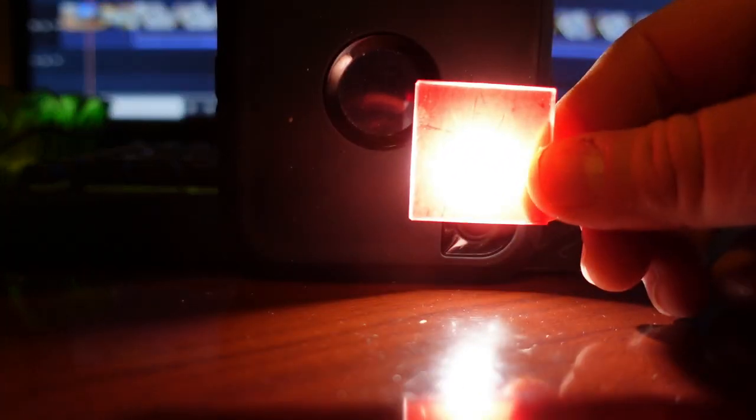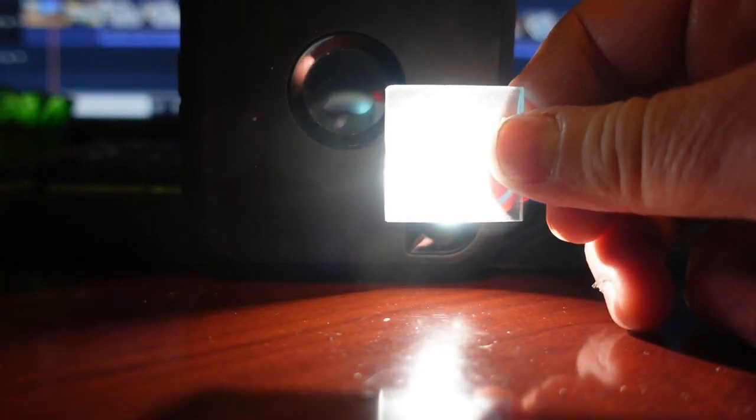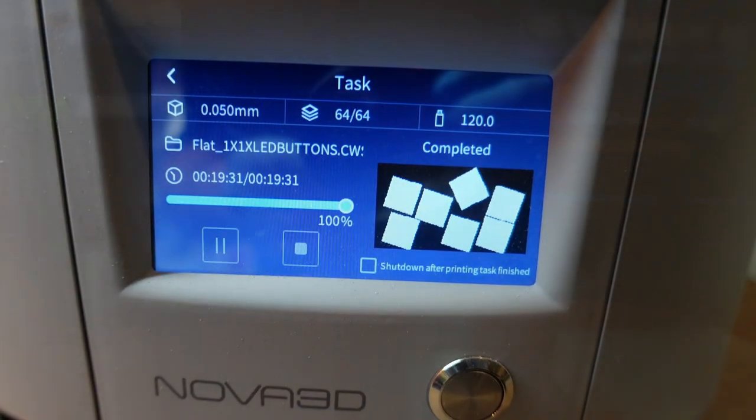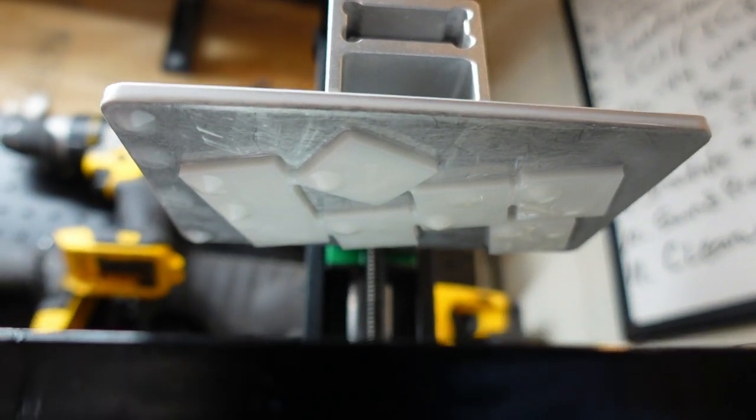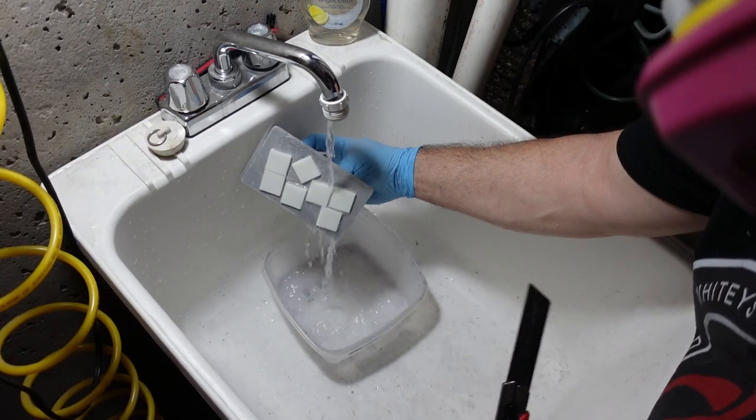I used the Elegoo water washable 3D resin. The first one was a white one, that one was a clear red, and this one is a clear blue. I could put seven of them on there and they print in about 19 minutes.